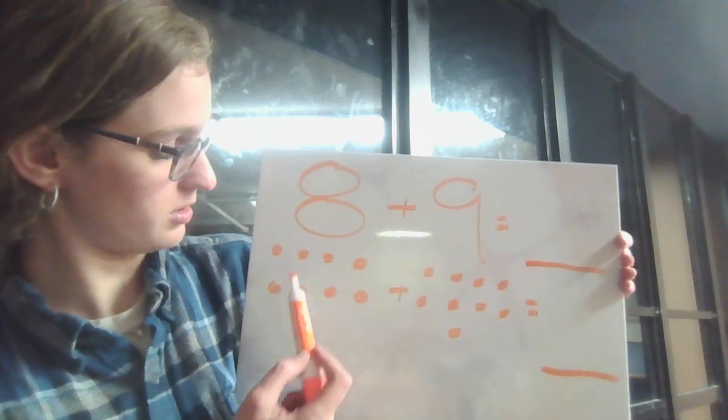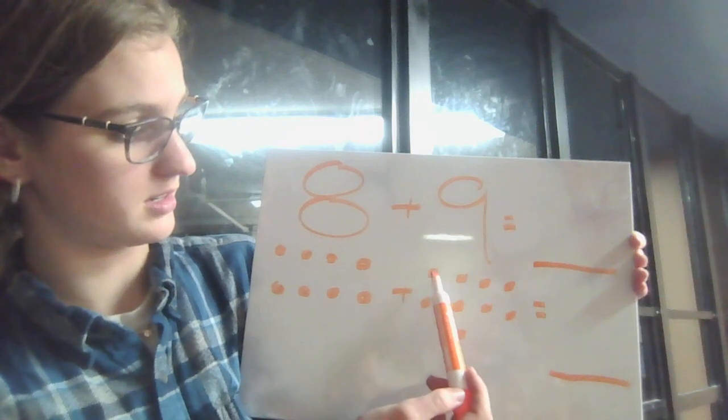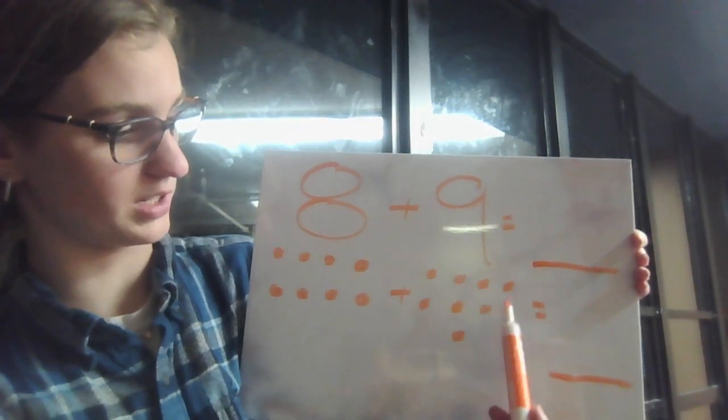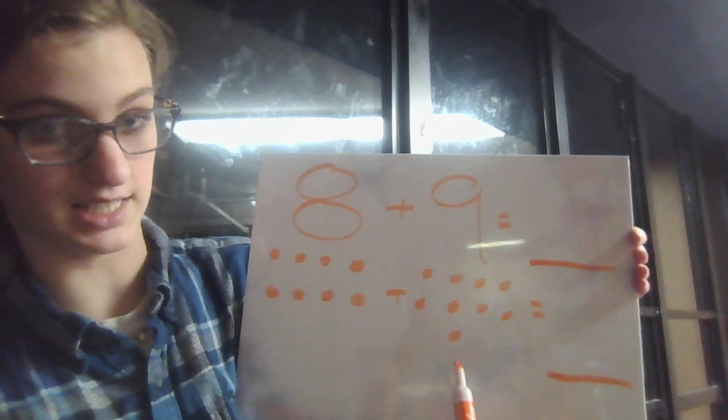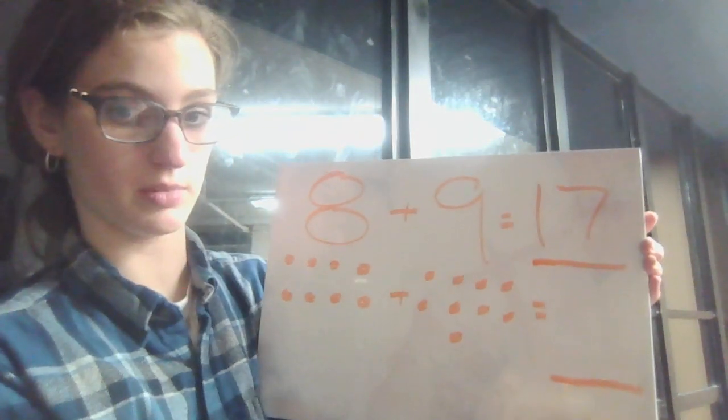Okay, so we're going to count. One, two, three, four, five, six, seven, eight, nine, ten, eleven, twelve, thirteen, fourteen, fifteen, sixteen, seventeen. That's a lot of dots that we have to draw out. Seventeen is your whole number,